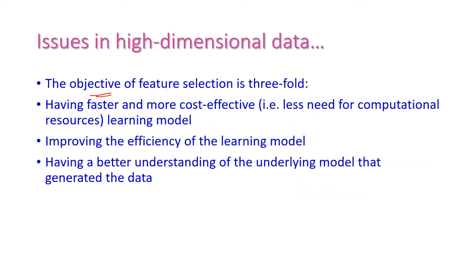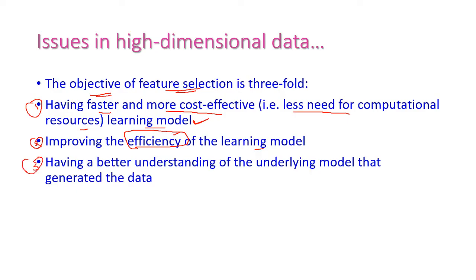Now let us see the objective of feature selection — on what basis we will select the required features from a very large dataset. The first objective is having a faster and more cost-effective learning model, meaning less need of computational resources. The second is improving the efficiency of the learning model. The third is having a better understanding of the underlying model that generates the data.